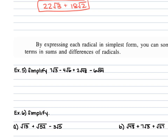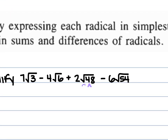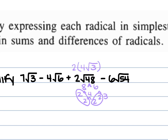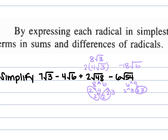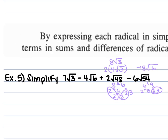For example 5, we have 7 square root of 3 minus 4 square root of 6 plus 2 square root of 48 minus 6 square root of 54. The 48 simplifies: 8 times 6, where 8 is 2 times 4 and 4 is 2 times 2, giving two pairs of 2's — so 2 times 4 square root of 3, which is 8 square root of 3. The 54 breaks down as 6 times 9; the 9 is 3 times 3, pairing up, so negative 6 times 3 is negative 18 square root of 6. So we have 7 square root of 3 minus 4 square root of 6 plus 8 square root of 3 minus 18 square root of 6.